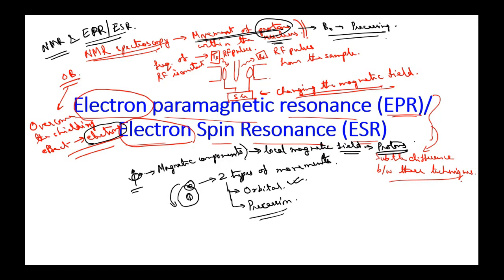The difference between NMR and EPR or ESR lies in the electromagnetic radiations used for analysis. In NMR we use RF pulses, whereas in EPR or ESR we use microwave radiations.